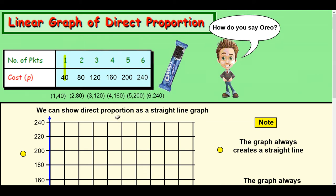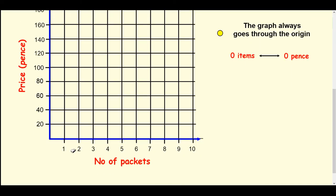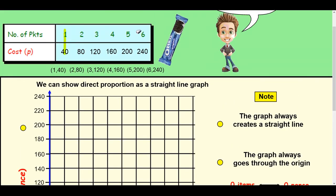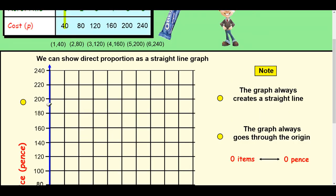So again we can show direct proportion as a straight line graph, so I'm going to do that down here. Now on your graph, the number of packets, I've gone up to 10 here, but we're going to 6, so I've just made it a bit bigger. And up and down the side, I've gone up in 20s, 20, 40, 60, 80, to go all the way to 240.